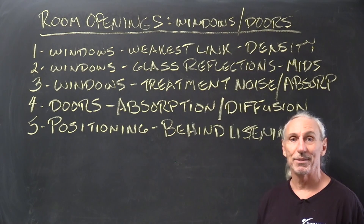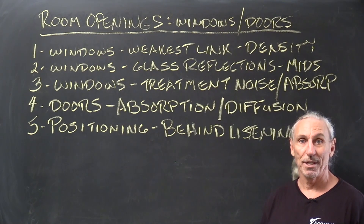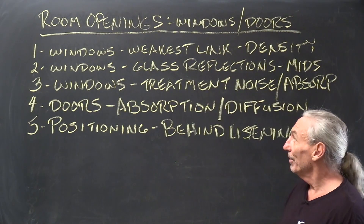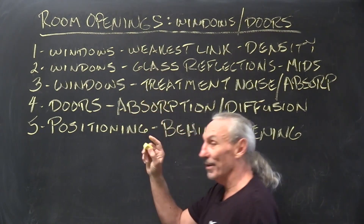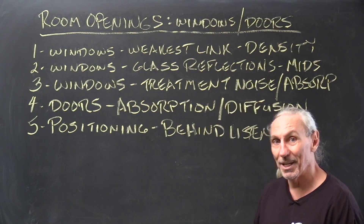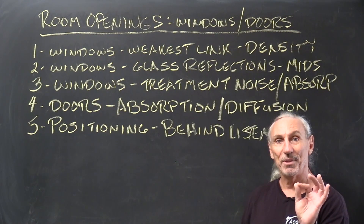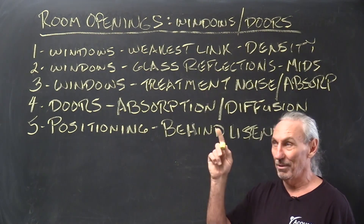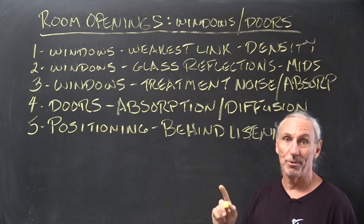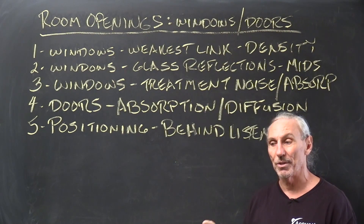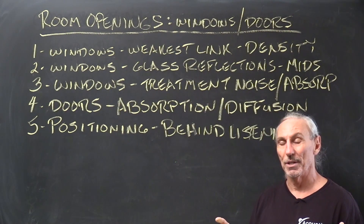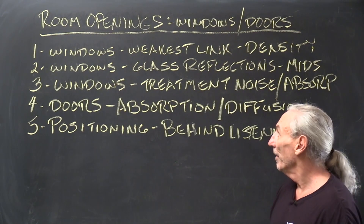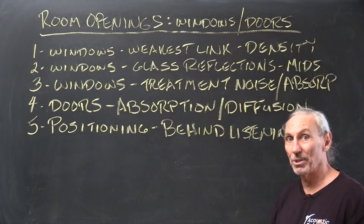All of our rooms have a door, obviously. Hopefully most of them don't have windows, but unfortunately they do. When we're talking about noise, windows are the weakest link in the whole room because they're just little thin panes of glass. If there's any noise outside, it's going to come in first through the windows, whether they're open or not, because it's the least dense part of the structure. Sound is like water — it looks for the weakest place or the hole to come through, and it will.